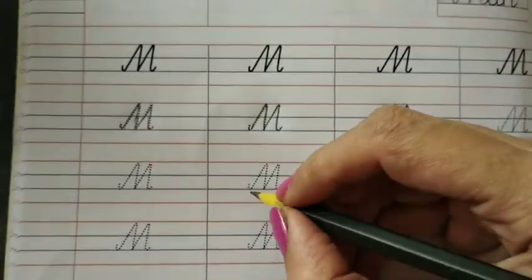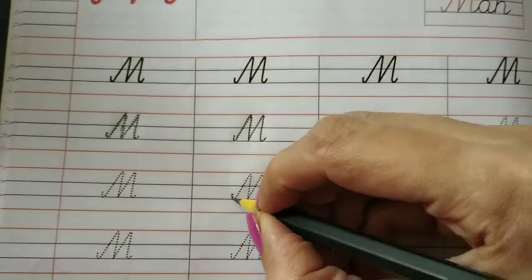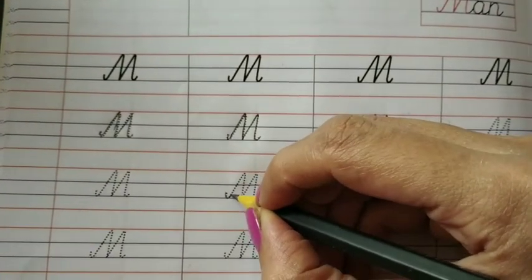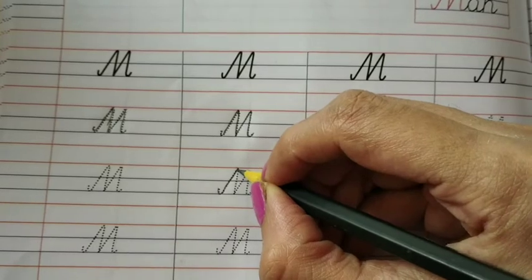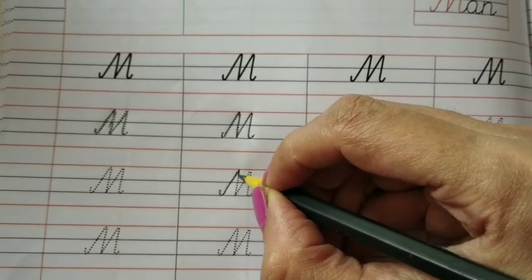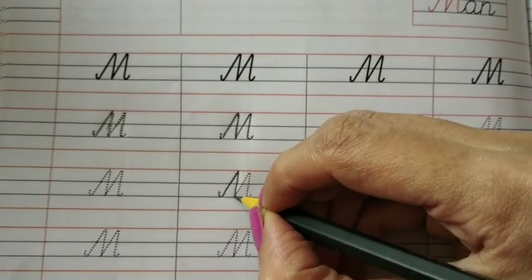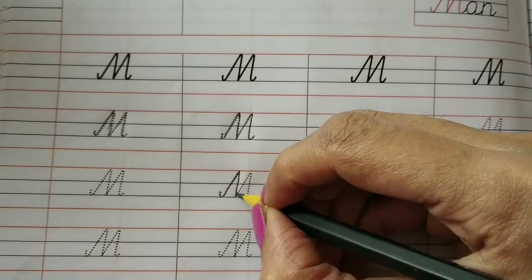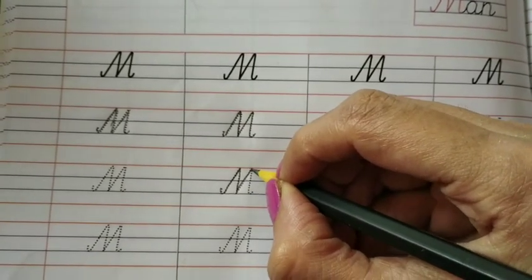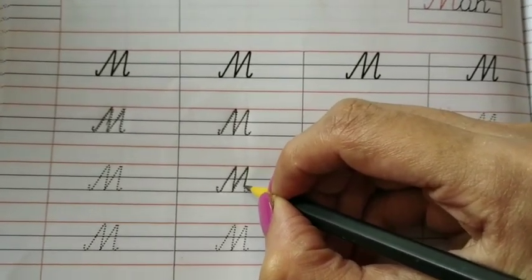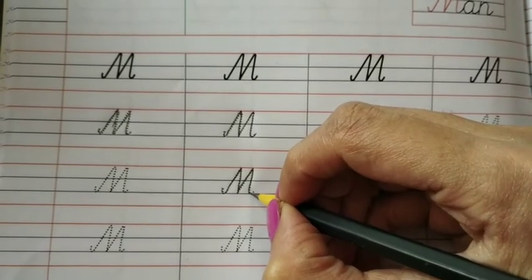One more time kids: make a small curve, go up to the upper red line, then come down to the lower blue line, go up again to the upper red line, and go down and make a curve.